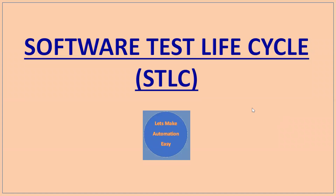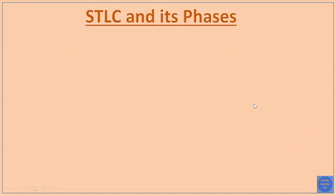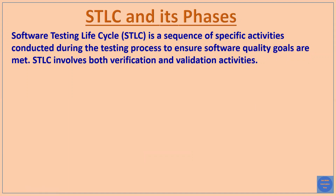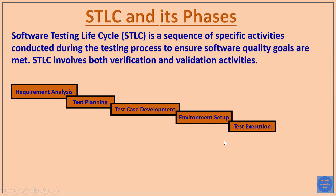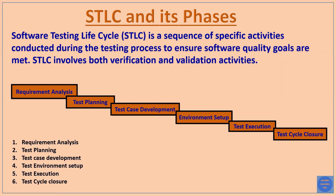Welcome. Today I'm going to tell you about the STLC — Software Test Life Cycle. We will discuss STLC and its phases. STLC is a sequence of activities which should be conducted during the testing process so that we can ensure we get good quality software. STLC involves both verification and validation. The six phases of STLC are: requirement analysis, test planning, test case development, environment setup, test execution, and test cycle closure.